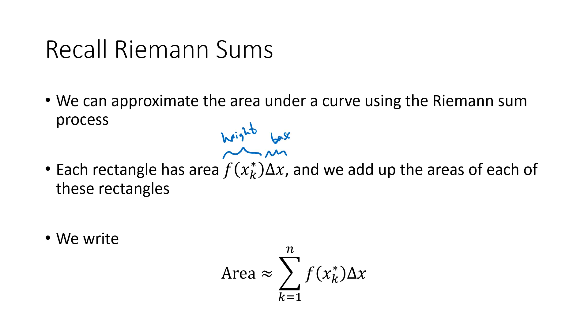That's the area of an individual rectangle and then we want to add up all of the rectangles to get our total estimate of our area. Because we do these sum things quite a bit in calculus, we have a special notation for it which is called sigma notation.